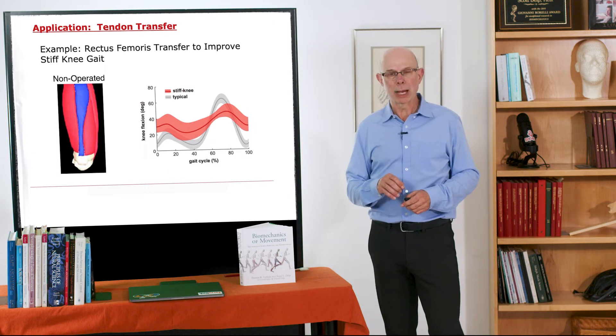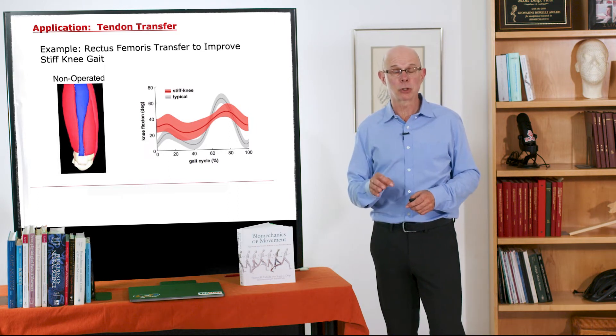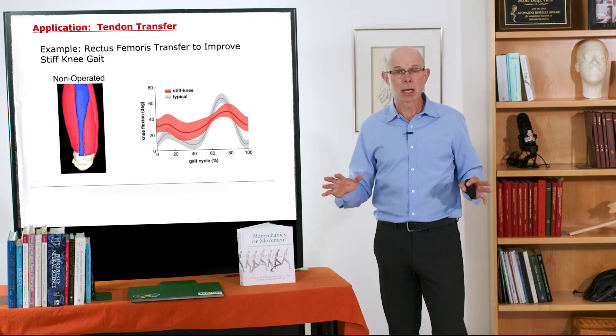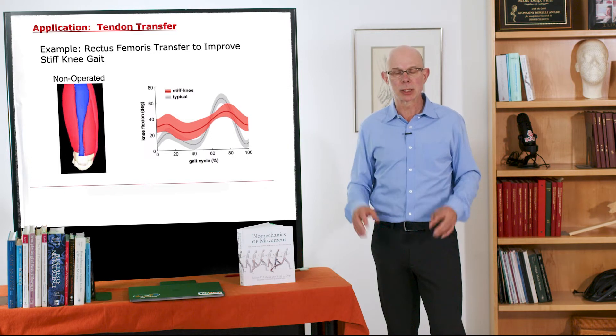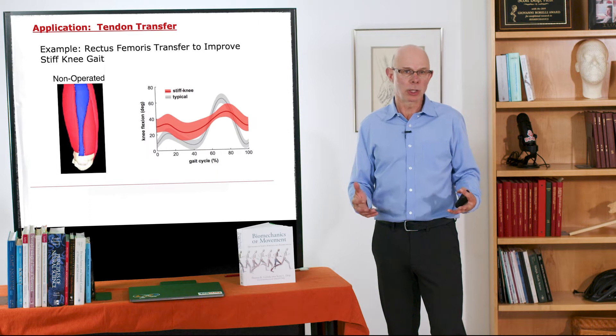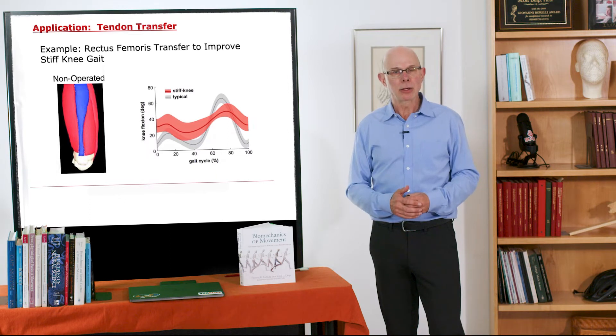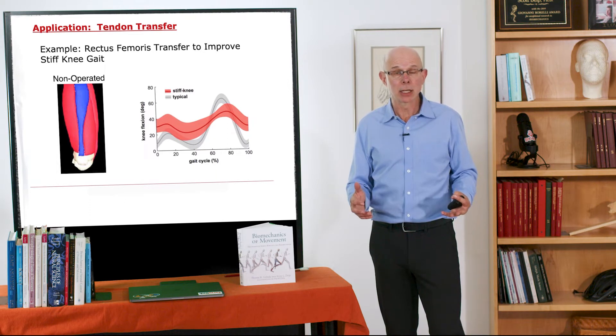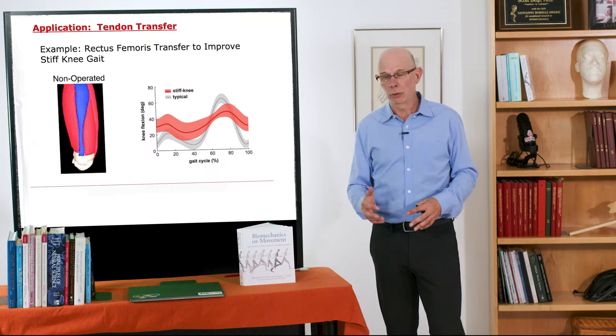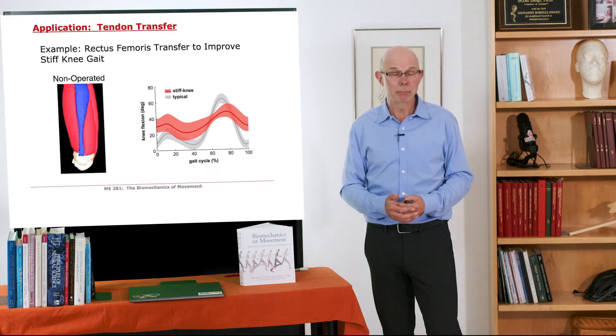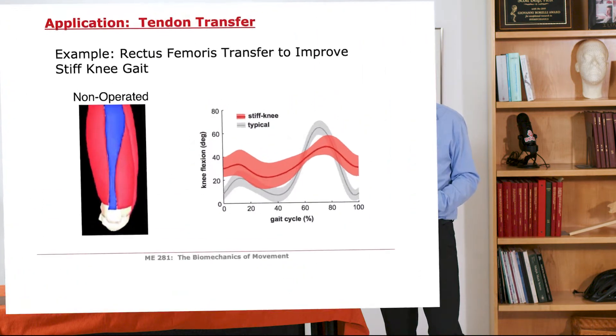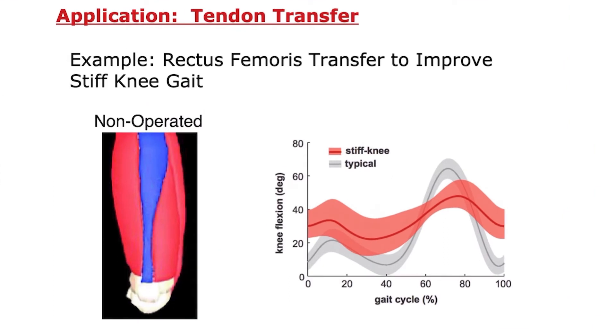The application I'll talk about is a tendon transfer surgery. There are many, many types of tendon transfer surgeries. I'll describe one so that you know what they are and then talk about how we might analyze the geometry in generic terms that would apply to many tendon transfers. So the one I'd like to talk about is a rectus femoris transfer that's done to improve stiff knee gait.